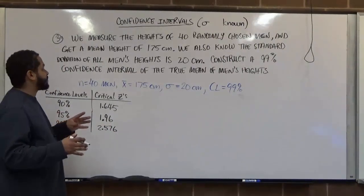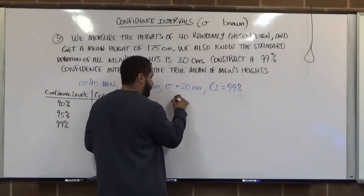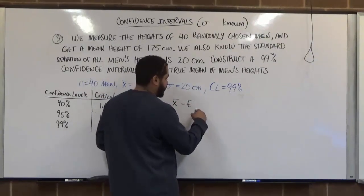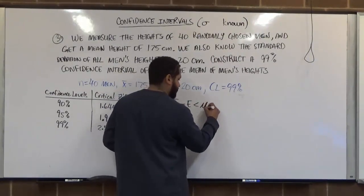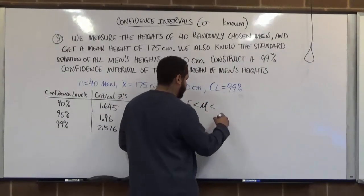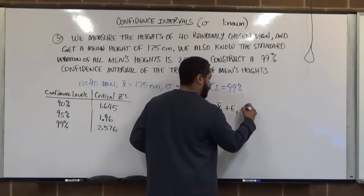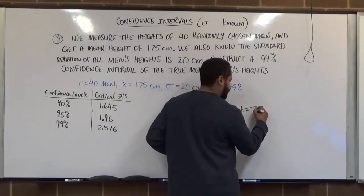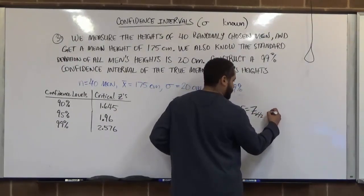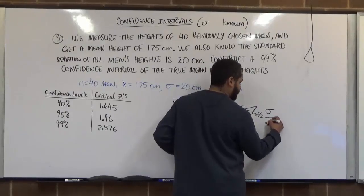Now, to conduct the actual confidence interval, we need to get a few values. Mainly, we know our best point estimate, which is the mean. We're going to subtract our margin of error, which we have to calculate. And this is always less than the mu value, representing the true mean. And here we have the best point estimate plus the margin of error, where the margin of error E equals the critical z value times the standard deviation of the population over the square root of the number of samples.